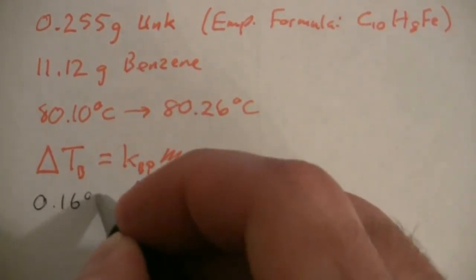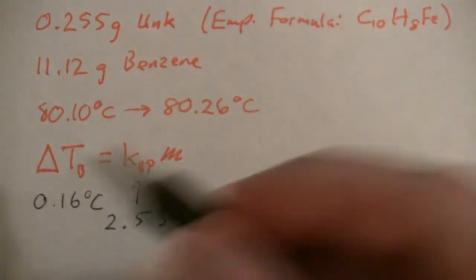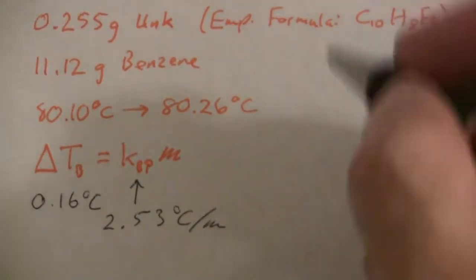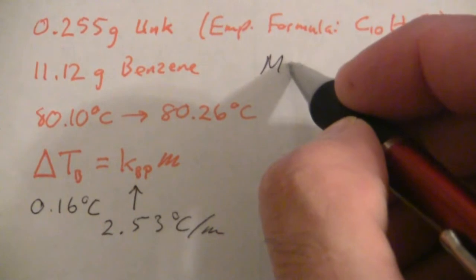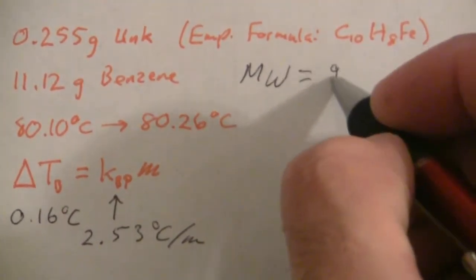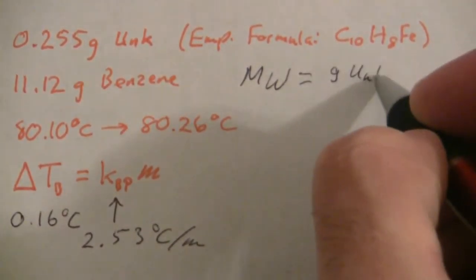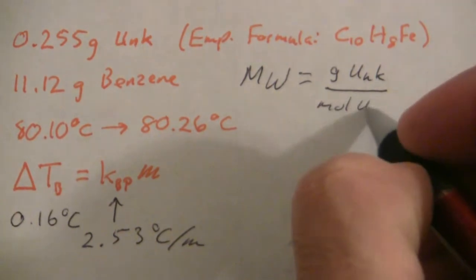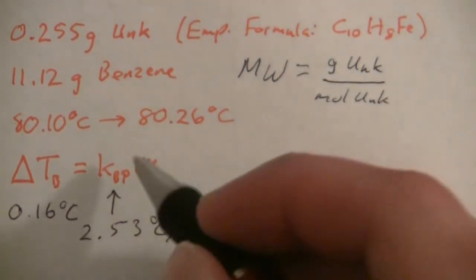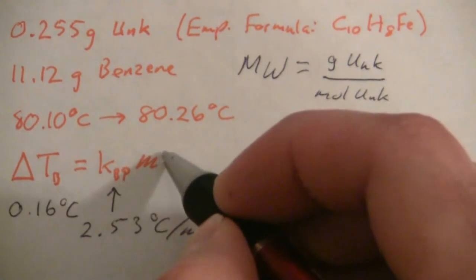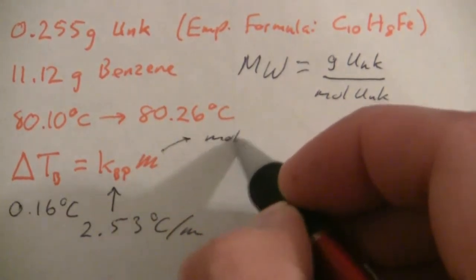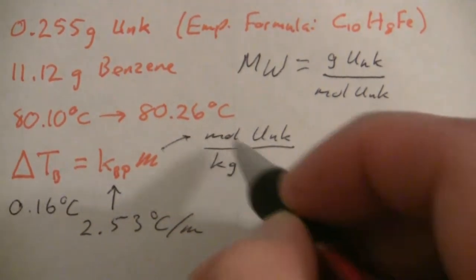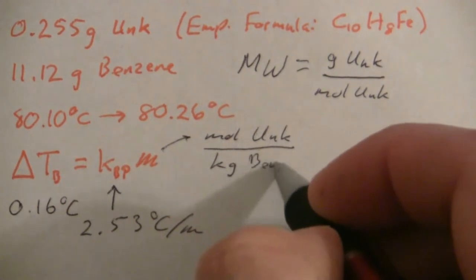We can divide to find the molality, but remember what are we looking for? We're looking to find the molar mass, which is the grams of the unknown over the moles of the unknown. But molality is going to give me the moles of the unknown per kilogram of my solvent, which is benzene.